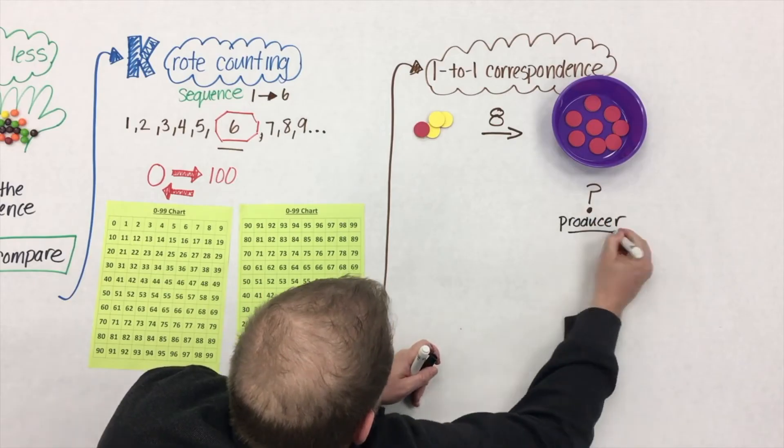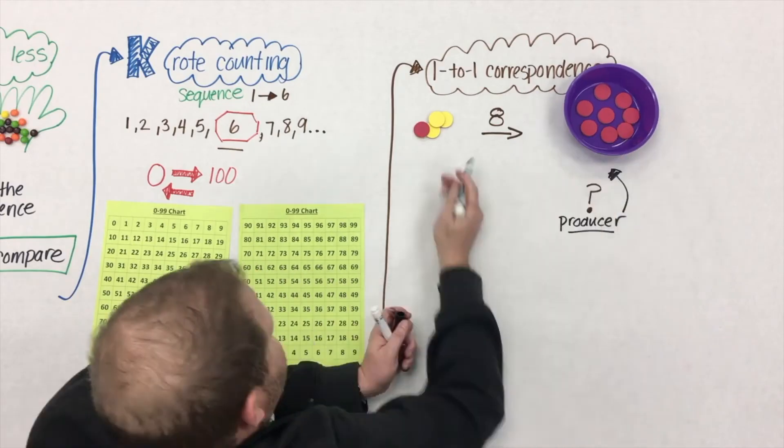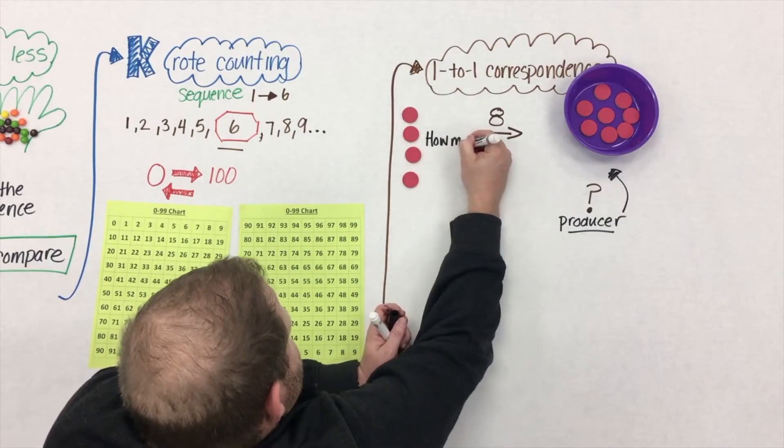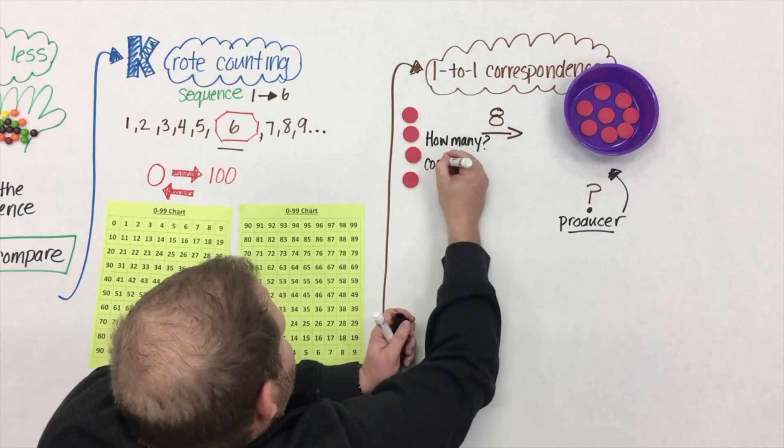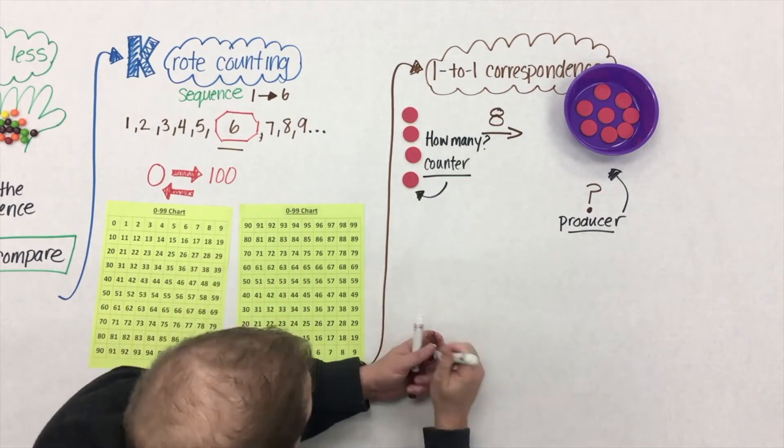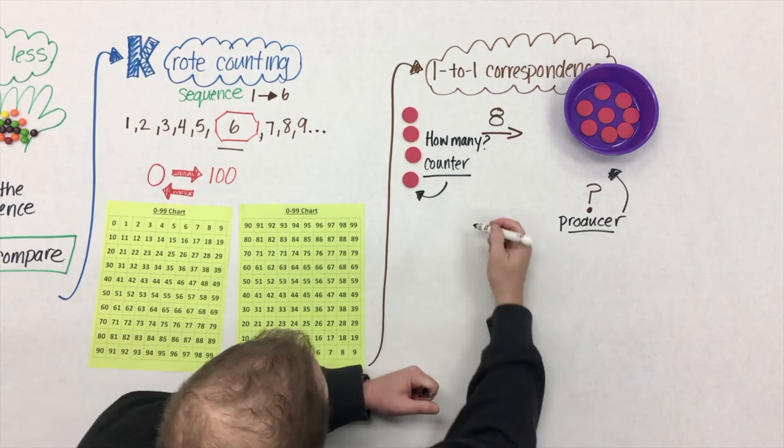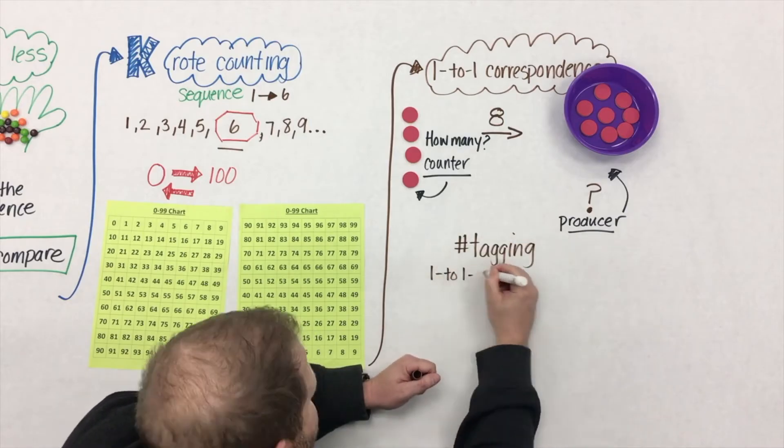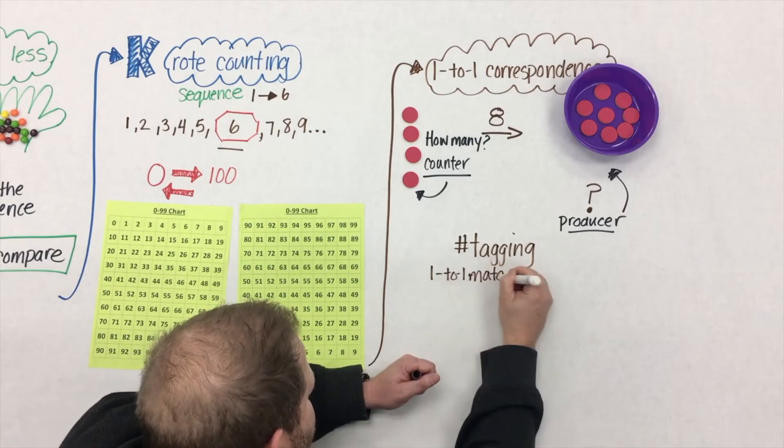they're a producer of counting. They're able to do that one-to-one tagging to eight. Now if you ask them how many were in the bowl, they don't know. They'd have to go back and recount them all over. A student that we'd ask how many didn't make it inside the bowl, well, they're a counter. They can count a finite set of a quantity. So for instance,